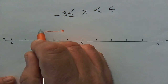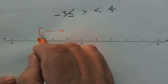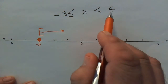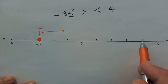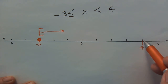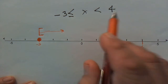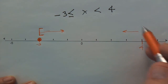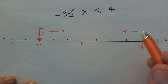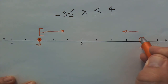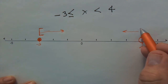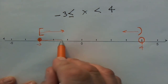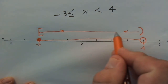The line extends until we reach positive 4 — that's 1, 2, 3, 4 to the right of zero. But is positive 4 included? No, because x is strictly less than 4 with no equal sign. So positive 4 is shown as an open circle, or in some books as a parenthesis. Our line runs all the way from negative 3 up to, but not including, positive 4.